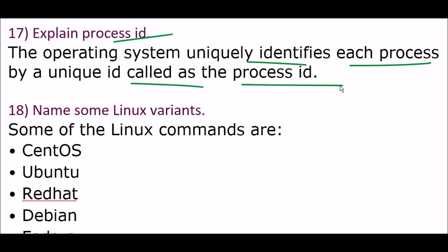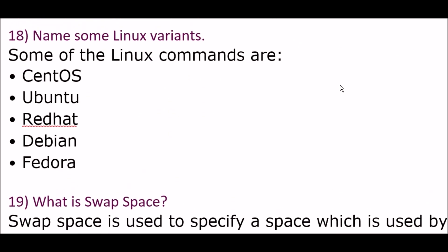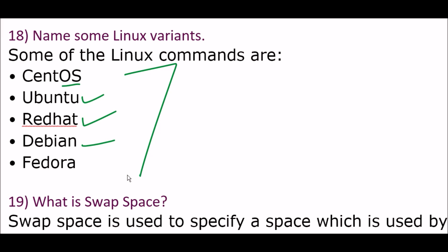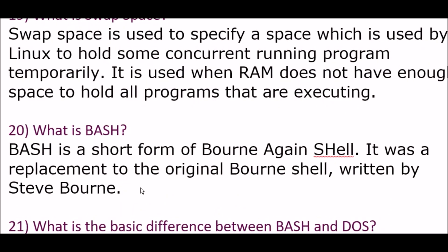Next question: name some Linux variants. Some of the Linux variants are: CentOS, Ubuntu, Red Hat, Debian, and Fedora. Next question: what is swap space? Swap space is used to specify a space used by Linux to hold some concurrently running programs temporarily.